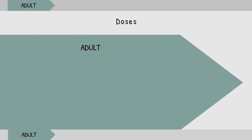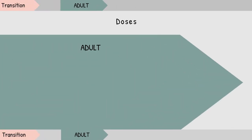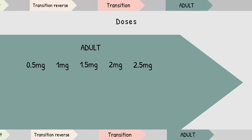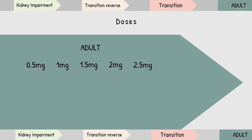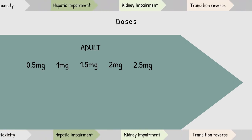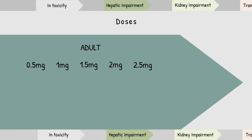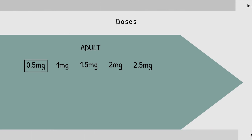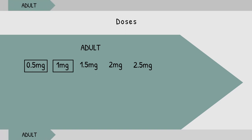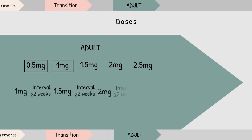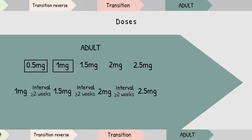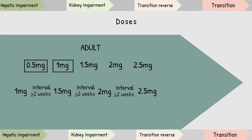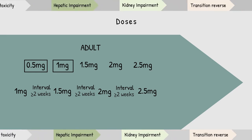Coming to doses, Riociguat is available in five variants: 0.5, 1, 1.5, 2, and 2.5 mg. If a patient has a high risk for hypotension, initiate at 0.5 mg three times daily; otherwise initiate at 1 mg three times daily, and titrate up to 2.5 mg three times daily with interval gaps of at least 2 weeks.